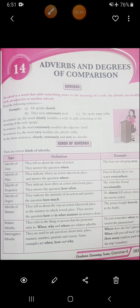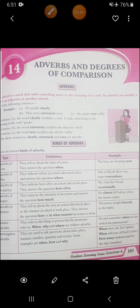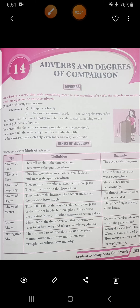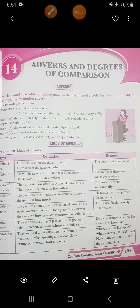Next is relative adverbs. Relative adverbs refer to the thing or person that the pronoun referred to, and they sometimes act as conjunctions as well. Example: 'Do you remember when we last visited the planetarium?' Then interrogative adverbs are used to ask questions about time, place, manner, number, quantity, and reason. Some examples are when, how, and why. Like: 'Where does she live?' 'When will you call back?' 'How many students paid for the trip?'